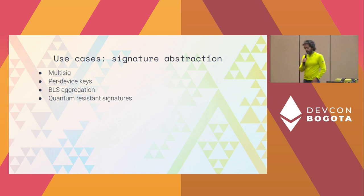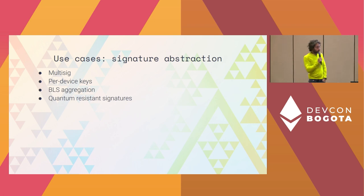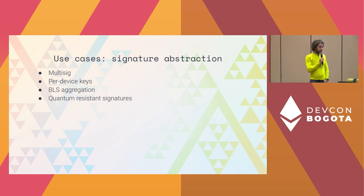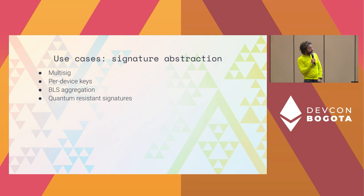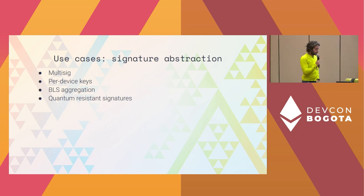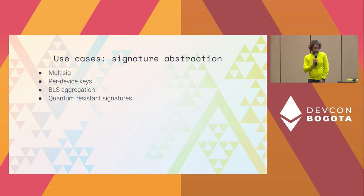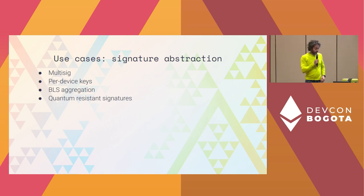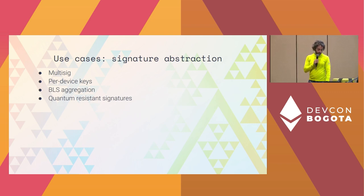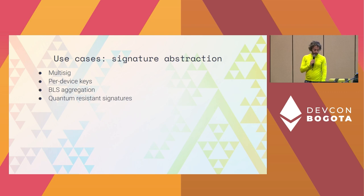The other big use case is quantum resistance. Eventually, the signature mechanisms we're using are going to be broken — it's only a matter of time. Quantum computing is making significant progress; the qubits are getting up there. Eventually we'll all have to stop using ECDSA. But hopefully, by the time this becomes a pressing problem, we'll be able to use any quantum-resistant signature mechanism that is gas-efficient and secure. You can swap that in — you have a lot of flexibility once you abstract away how signatures work and it's not hard-coded.